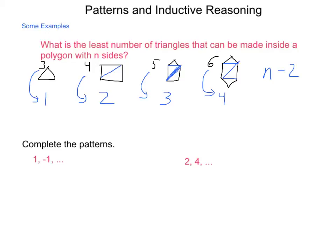So with the pattern 1, -1, one might say that this is simply subtracting two, so I'd go -3, -5, -7, and so on.